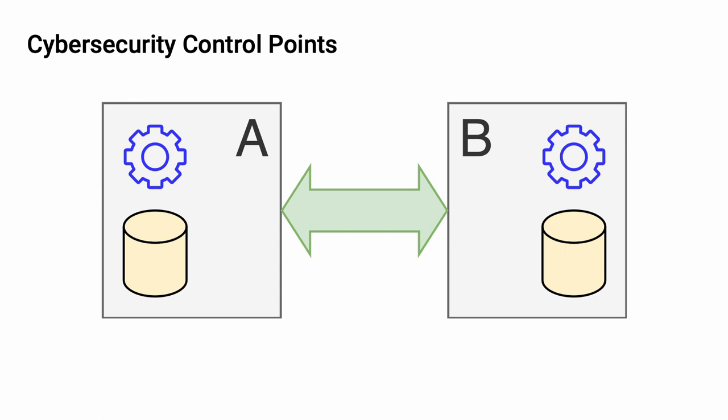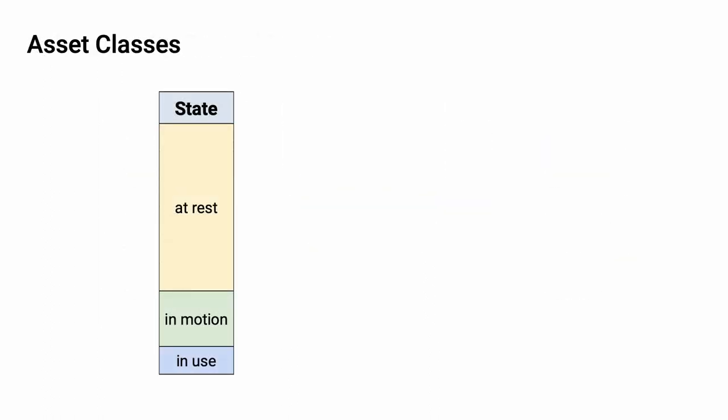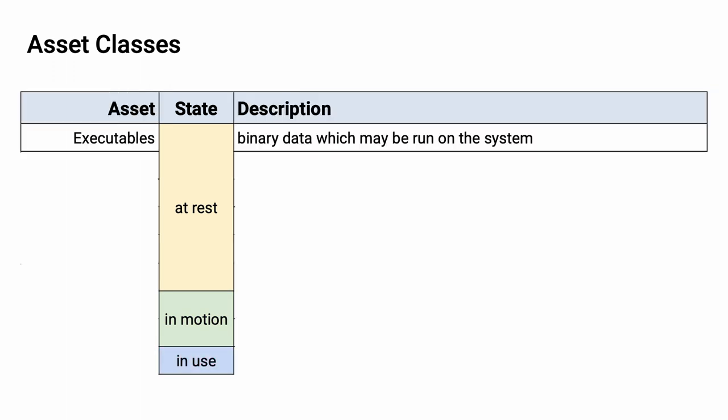When we bring these three together, we can see that we're covering the lifetime of the data. Now let's look in more detail at the asset classes that fall into these three categories. Let's enumerate the asset classes for the different states: data at rest, data in motion, and data in use. Our first class within data at rest is executables — any binary data which may run on the system. This includes software and firmware.